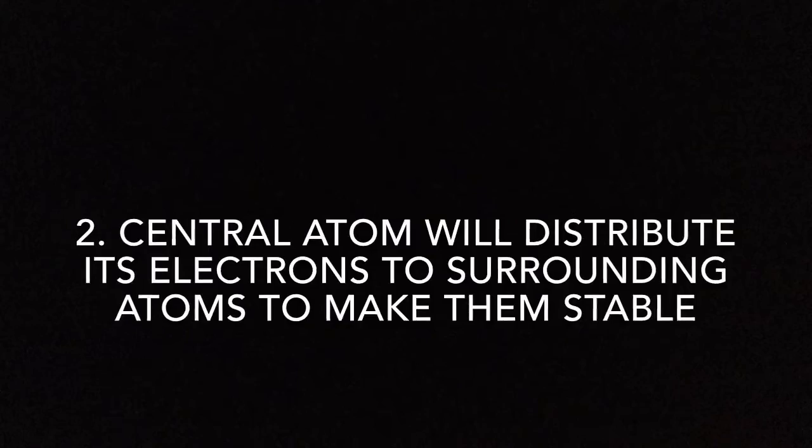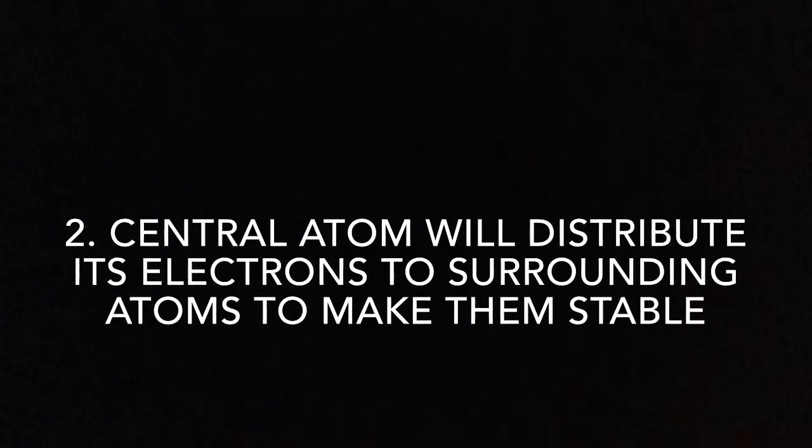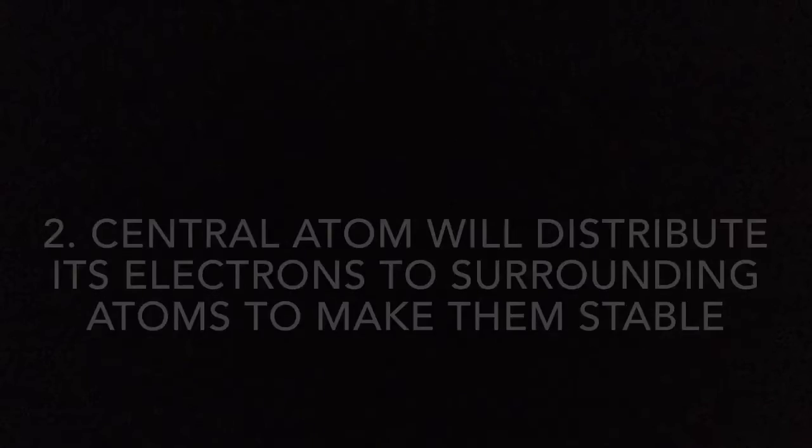Number 2: the central atom will distribute its electrons to its surrounding atoms to make all of them stable. After distribution of electrons to the surrounding atoms, we have to look back at the central atom to make sure that all the electrons of the central atom are accounted for.